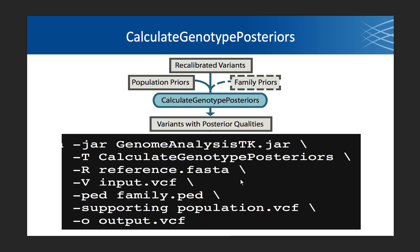To run genotype posteriors, the command line looks very similar. If you have a pedigree for trios in your study, supply it as a .ped file with the ped argument. If there is a high-quality population resource available for the organism you're studying, you can supply a population VCF as supporting information to get a good estimate of prior allele frequencies for those variants.